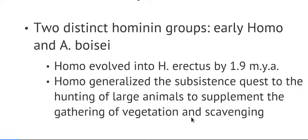It was the early Homo and the Australopithecine boisei coexisting. The first versions of the Homo genus are what we call today Homo erectus and Homo habilis. Erectus was on the planet about 1.9 million years ago, and the traces we have describe an animal specializing in hunting, gathering, and scavenging — hunting large animals, understanding vegetation, and taking advantage of other animals' kills.